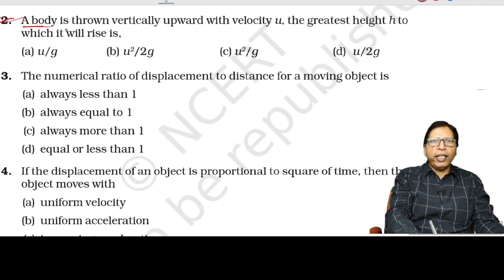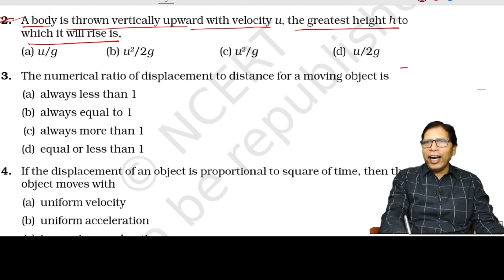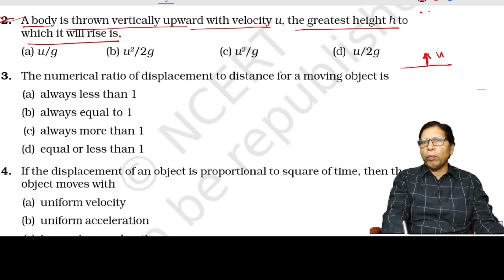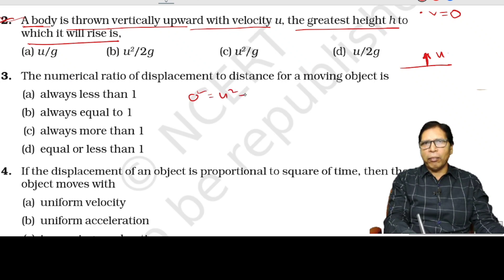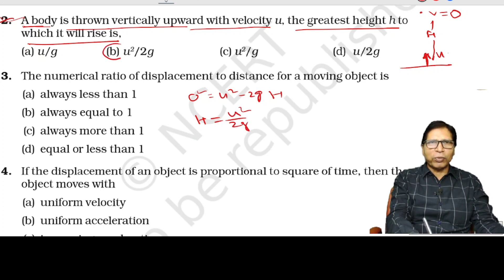Question number 2: a body is thrown vertically upward with velocity u. The greatest height h it will rise — at the top point, final velocity equals 0. So we write: 0² = u² − 2gh, which gives h = u²/2g. This option is correct.